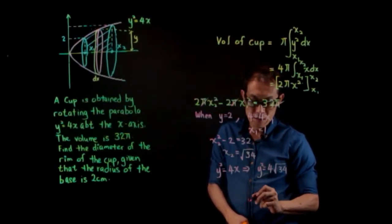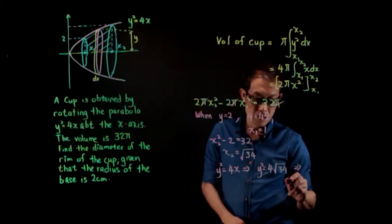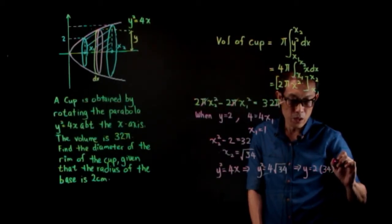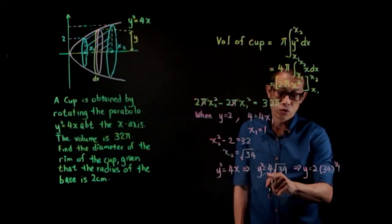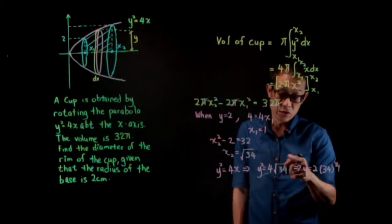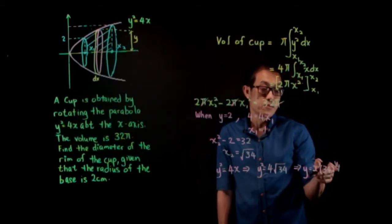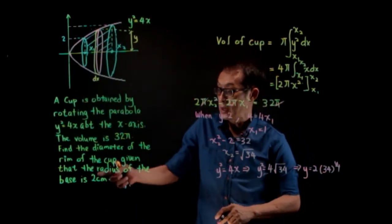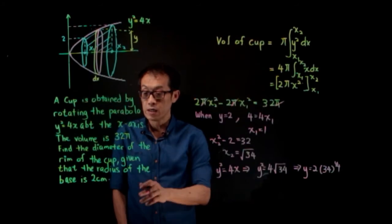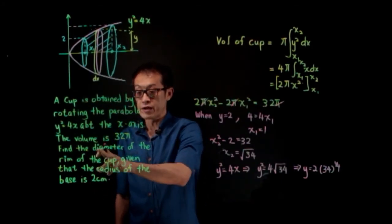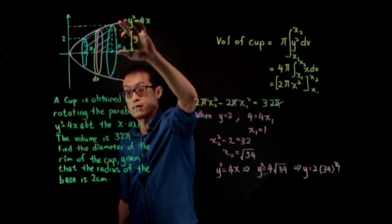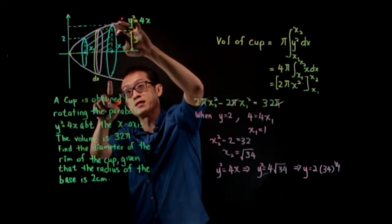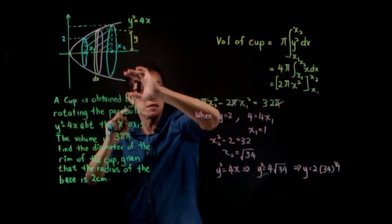So y² = 4√34, which implies y = (4√34)^(1/2) = 2 · 34^(1/4). The square root of 4 is 2 and √(√34) = 34^(1/4), so y = 2 · 34^(1/4). But we are asked for the diameter of the rim — this diameter equals 2 times the radius.